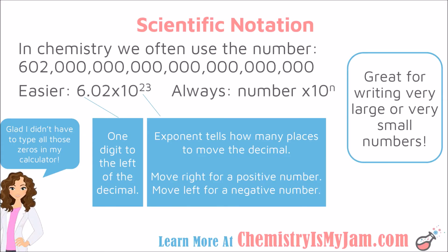Scientific notation always follows this pattern: you have a number times 10 to some exponent, and the exponent is telling you how far you have to move the decimal. There are some general guidelines about that number — you want one digit to the left of the decimal, and any other digits would be to the right of the decimal. So there is typically only one digit to the left of the decimal.